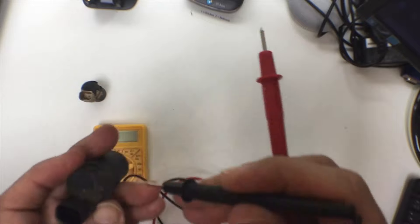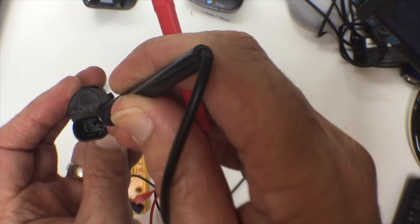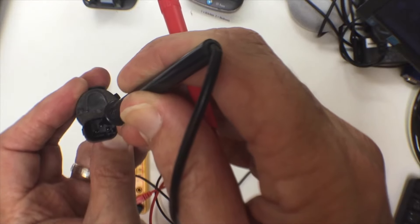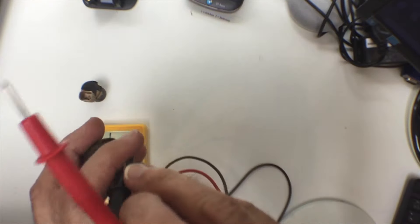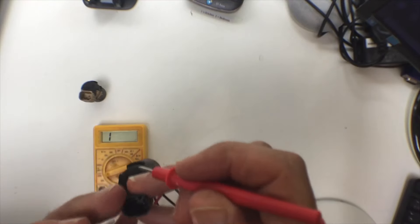Then we're going to be putting the black probe on pin two, which is the top middle one. Now I reiterate again, this is with the multimeter on the highest possible setting, and you'll see later when we test a new one that it has a much lower resistance.